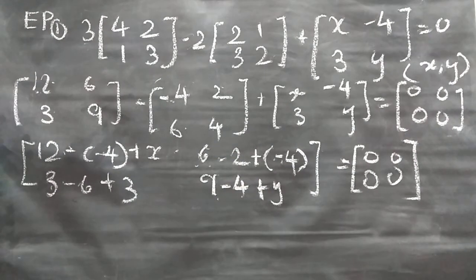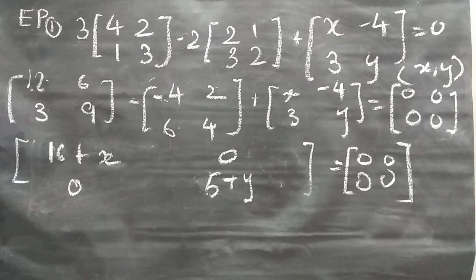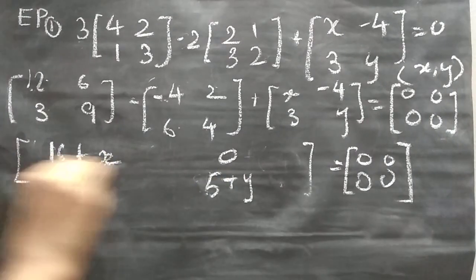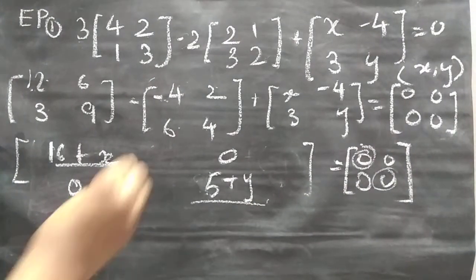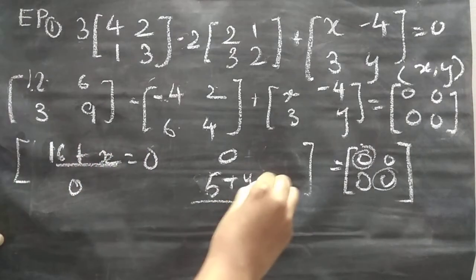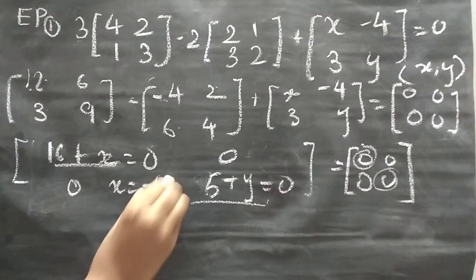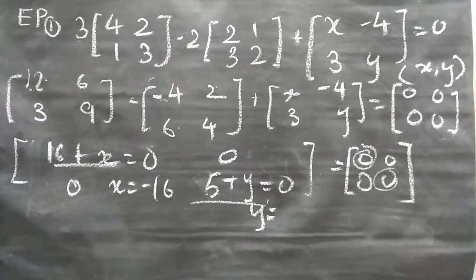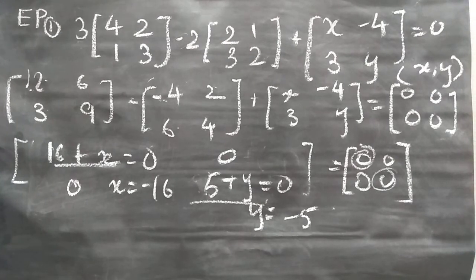And 9 minus 4 is 5, so 5 plus y. Now we need to find x and y: 16 plus x equals 0, so x equals minus 16. And 5 plus y equals 0, so y equals minus 5. You can take option C: x = −16, y = −5.